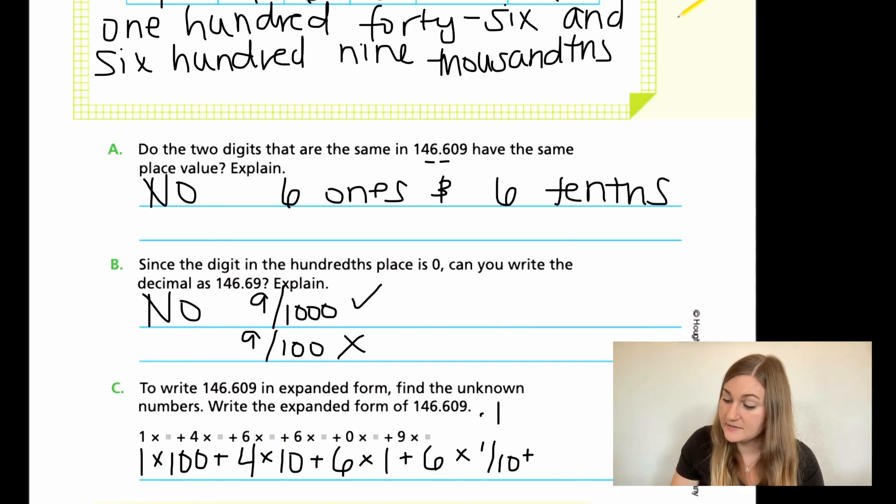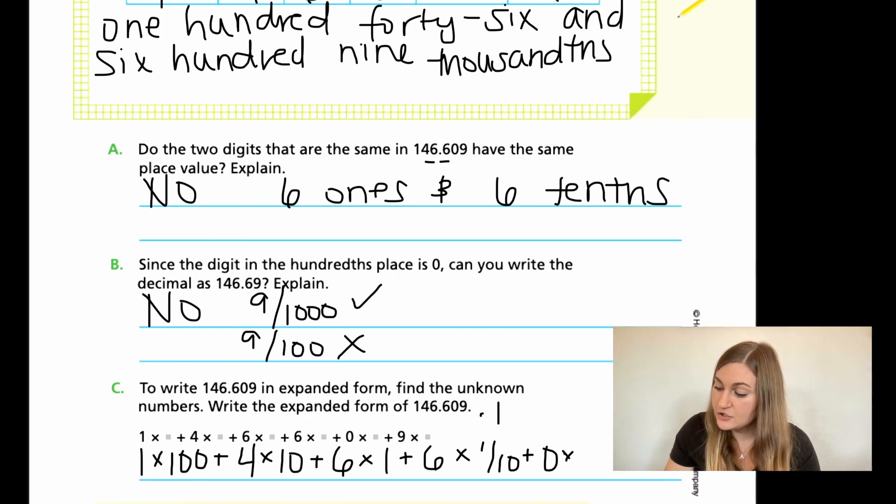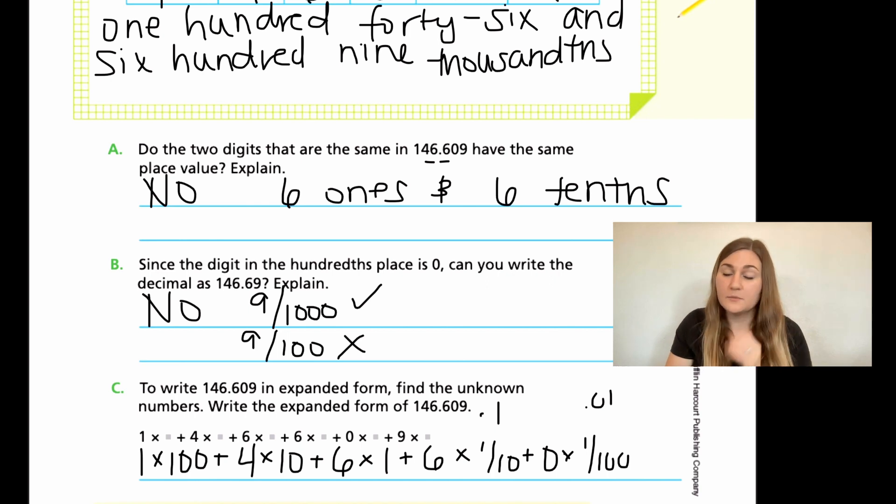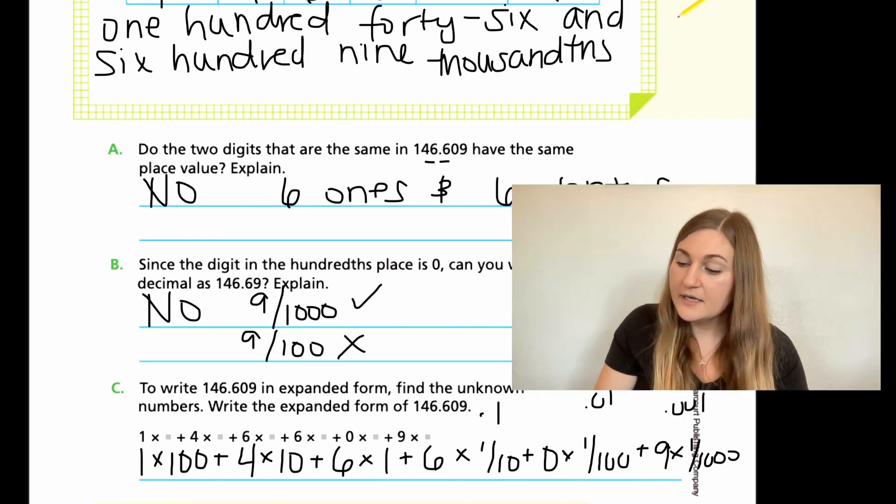Then adding to the next place value, we have a zero. And remember, we can't skip this. So it's zero times by, this is the hundredths. As you write it as a decimal, it would be 0.01, right? Just removing it one place away from the decimal. And our last number as the nine would be in the thousandths. And that would be 0.001.